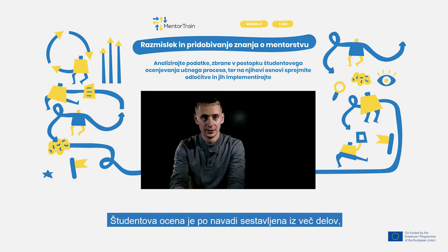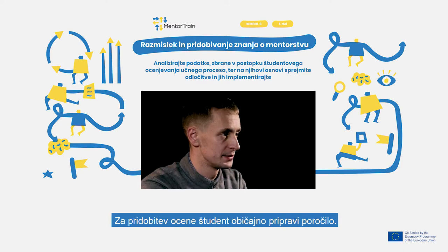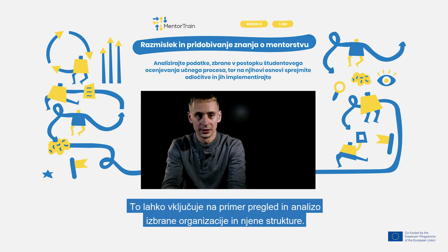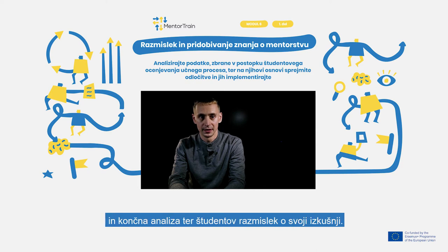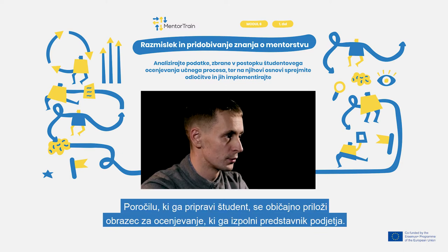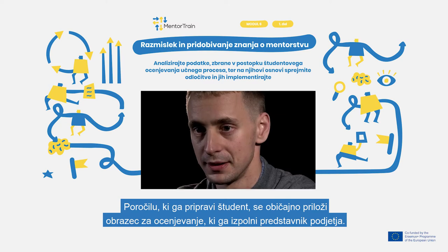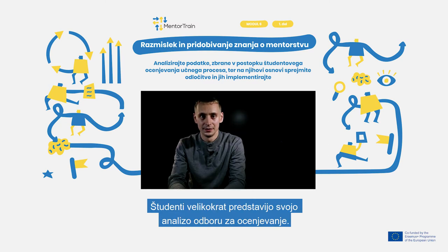Assessment of an apprentice usually comprises several parts, so a lot of information is gathered. To get an assessment, the student usually compiles a report. For example, it can consist of an overview and analysis of the chosen organization and its structure, a statement of the apprentice's goals, a daily diary of the apprenticeship, and a final analysis and self-reflection about one's experience. The report compiled by the student is usually supplemented by an evaluation form filled by the company's representative. In many cases, students present their analyses to an assessment committee.